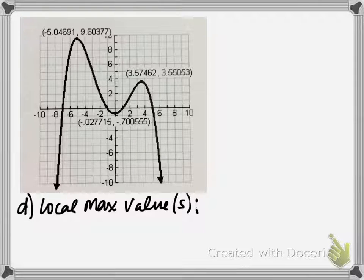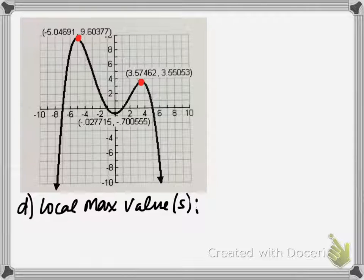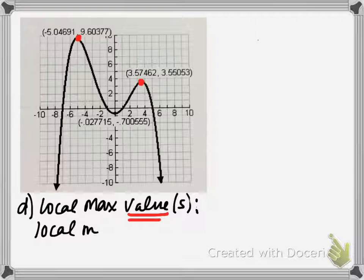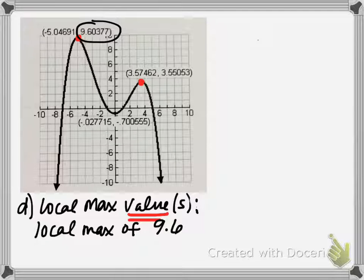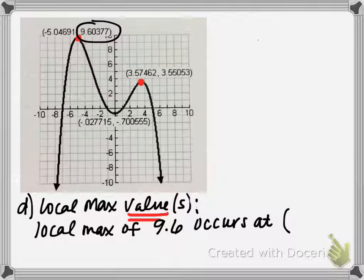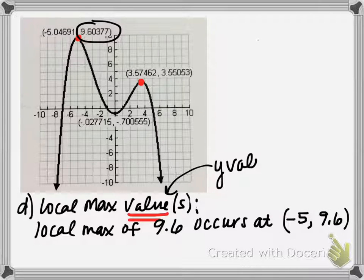Next, we're interested in the local max value or values. We're looking for the peaks of the graph — the high points. We have a local max at the coordinate about negative 5 comma 9.6, and then another local max. When they're asking specifically for the value, that means they're asking for the y values of the local maximum. So the local max value is 9.6, and it occurs at the coordinate about negative 5 comma 9.6. So the coordinate is where the maximum occurs, but the actual local max value is the y value, 9.6.